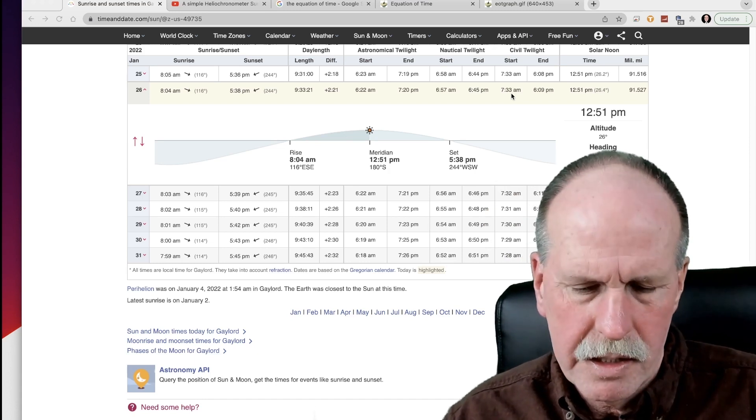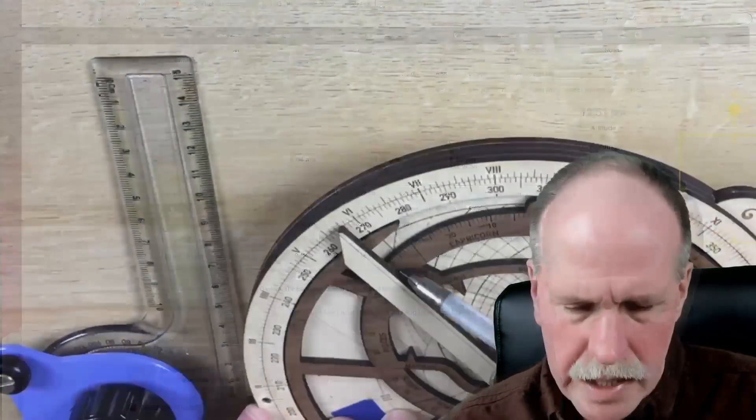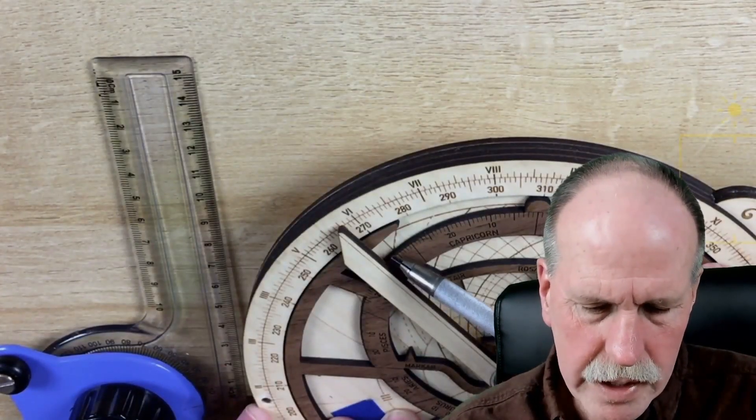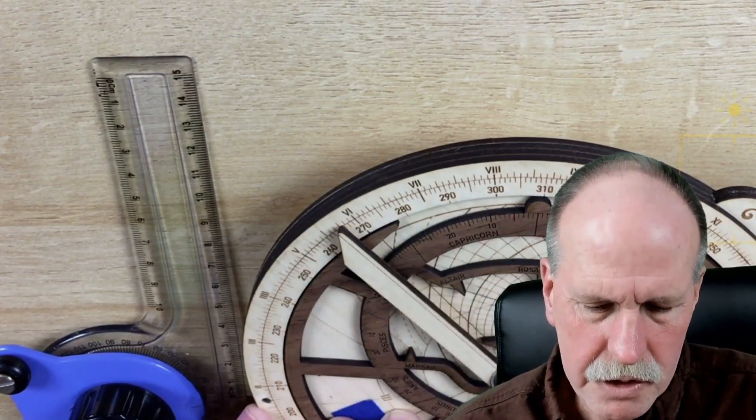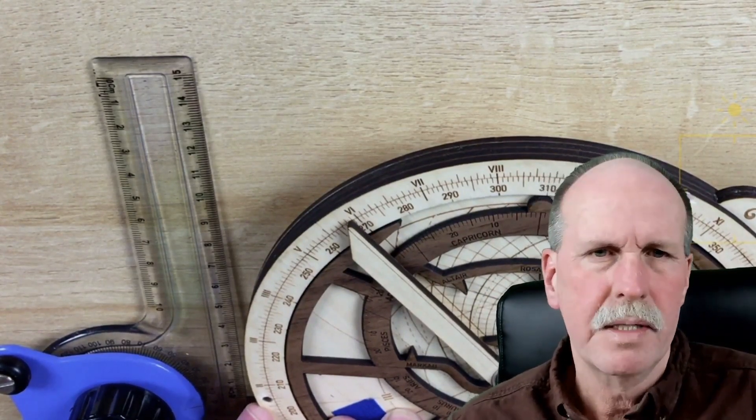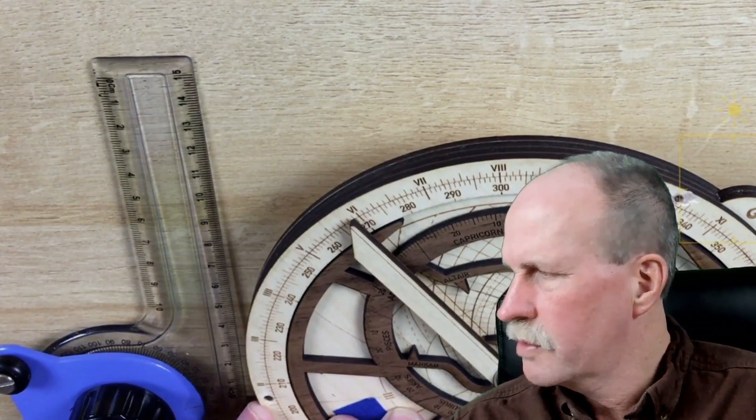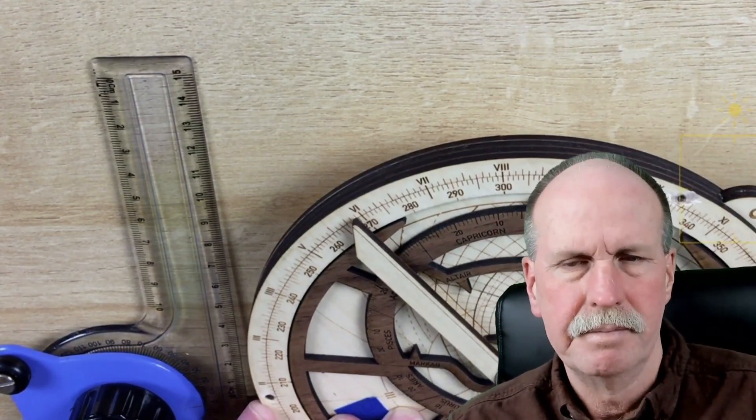How about nautical twilight? Well we just kind of do the same thing. Okay so we've got the seventh day of Aquarius lined up with nautical twilight. They meet right there at 6 a.m. So it should be about 6:50. And according to this we've got 6:57. Not bad.